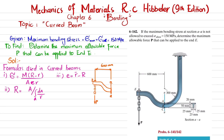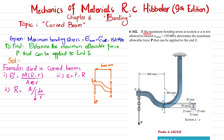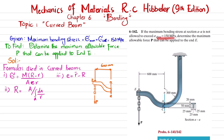Welcome back. In this video we are going to solve problem 6-142 taken from chapter 6 on bending from Mechanics of Materials by R.C. Hibbeler, 9th edition. The topic is curved beams. The problem states: if the maximum bending stress at section AA is not allowed to exceed 150 MPa, determine the maximum allowable force that can be applied to the end of the beam.